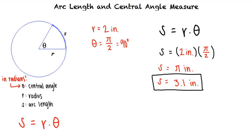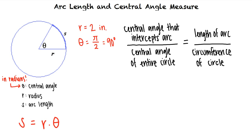There is another way we can solve this problem. Let's take a look at the following proportion. The central angle that intercepts the arc divided by the central angle of the entire circle is equal to the length of the arc divided by the circumference of the circle.